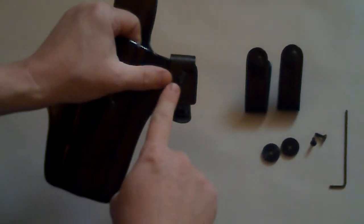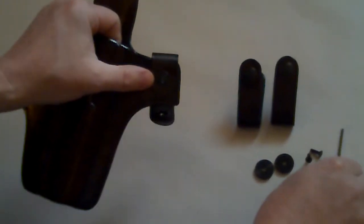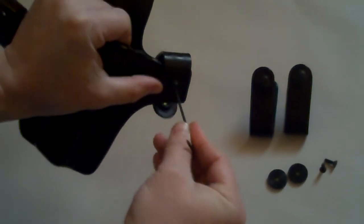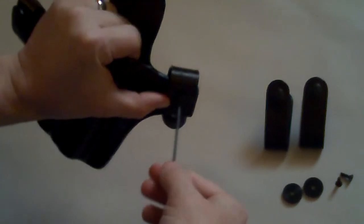Then if you look close, you can see that there's a screw inside there. Take your allen wrench and unscrew it.